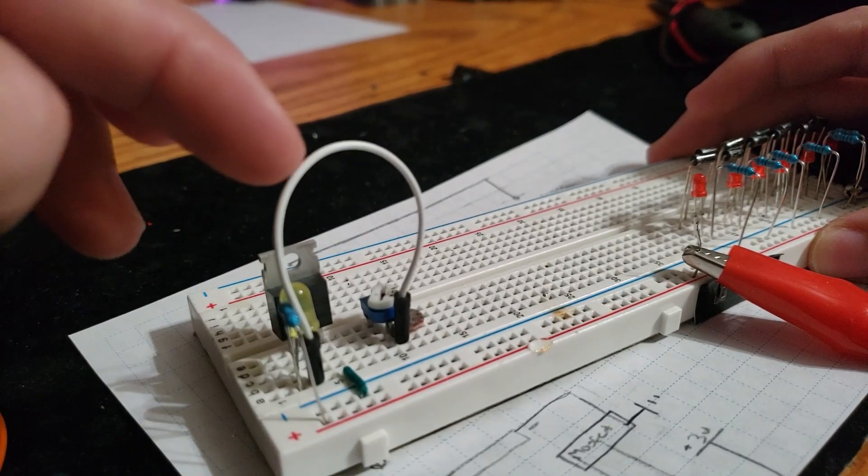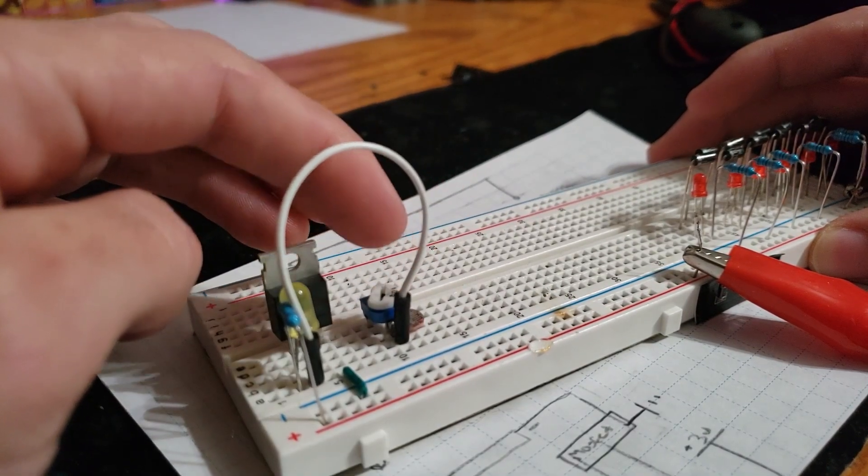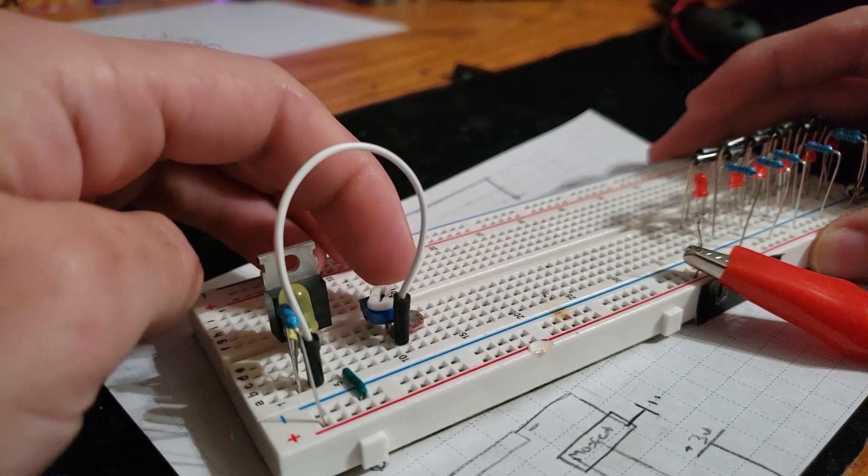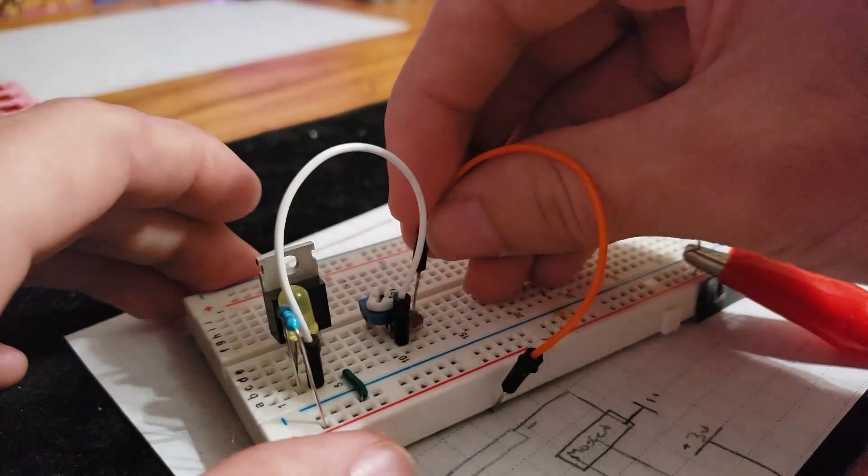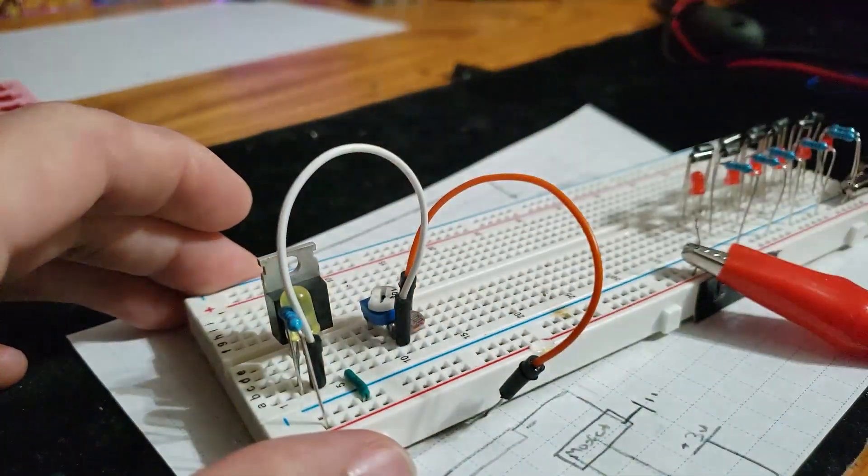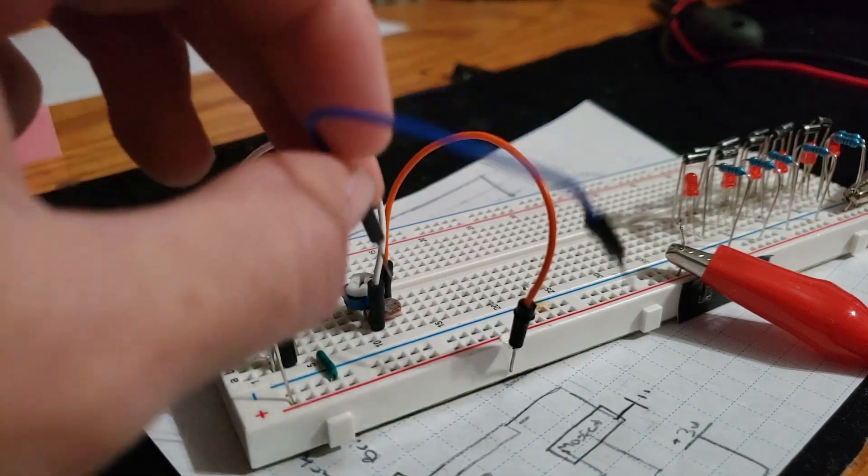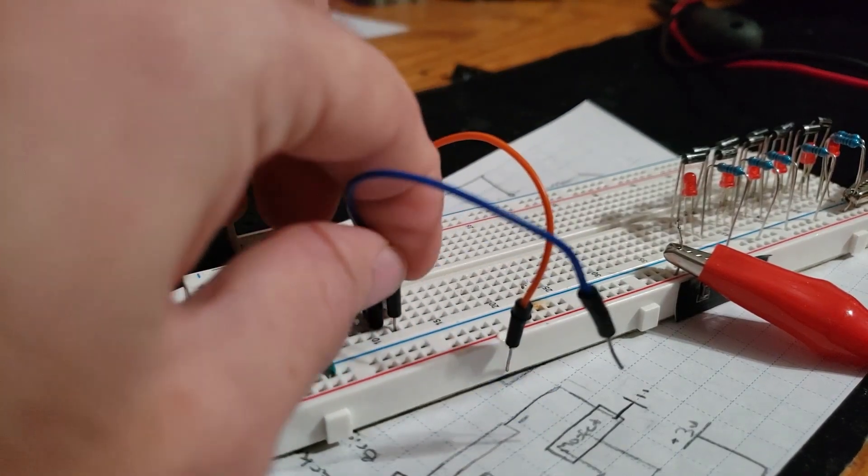This white jumper wire goes to the middle between the potentiometer and the photoresistor. I'm going to put this orange wire on the open end of the photoresistor. I'm going to put the blue jumper wire on the open end of the potentiometer.